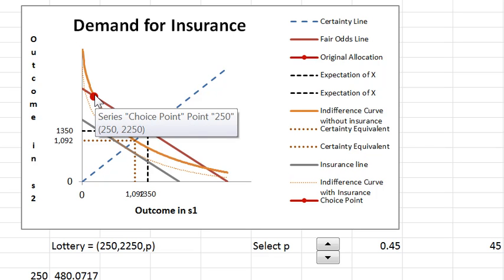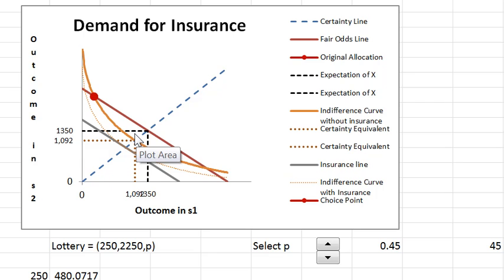What insurance is supposed to do is transfer income from the no loss state to the loss state. So we're going to move down and to the right to more equalize income. Insurance shifts income over states like if you remember borrowing and saving shifted income over time.